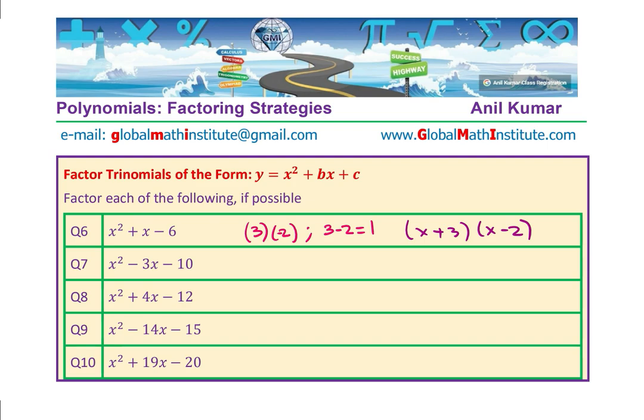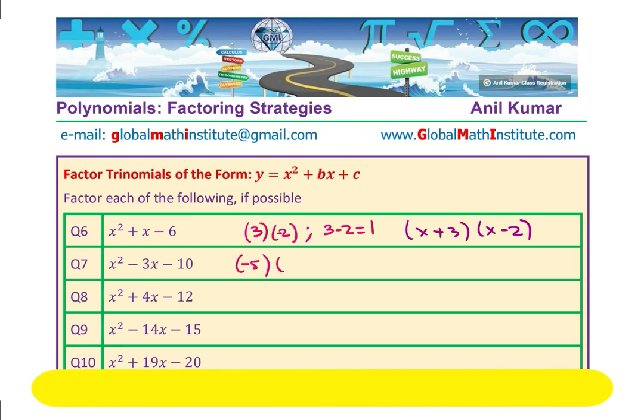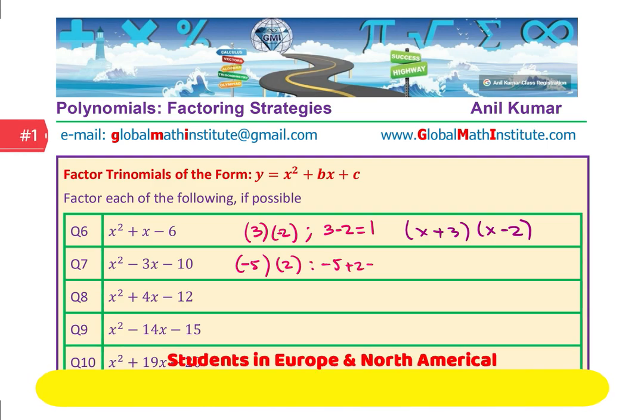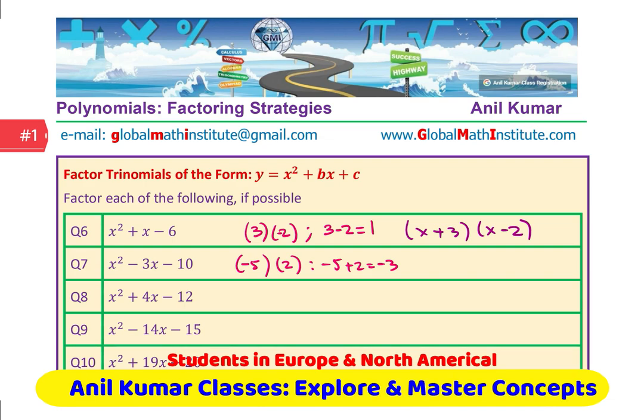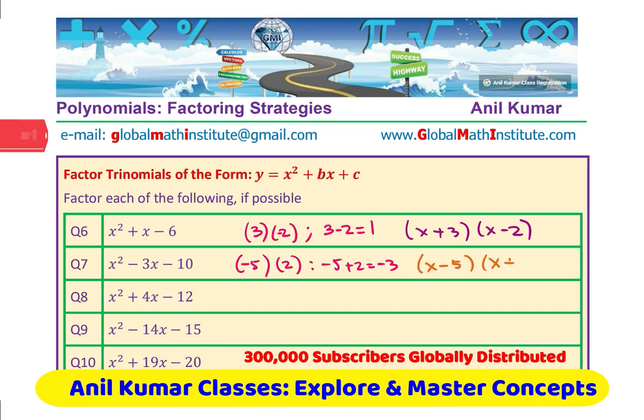That is how you have to do it. 10 minus 3, minus 10 minus 3, 5 times 2. 5 being bigger number negative. We know minus 5 plus 2 is minus 3. It works for us. We can write this as x minus 5 times x plus 2.